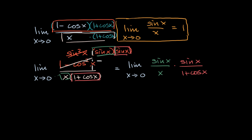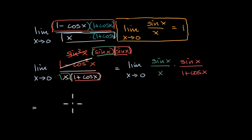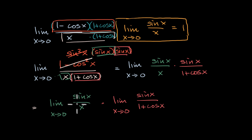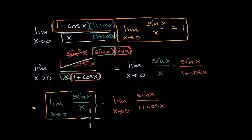All I've done is leveraged a trigonometric identity and done a little bit of algebraic manipulation. The limit of the product of these two expressions is the same as the product of the limits. So I can rewrite this as the limit as x approaches zero of sine of x over x, times the limit as x approaches zero of sine of x over one plus cosine of x. We said we know the first limit — the limit as x approaches zero of sine of x over x — is equal to one.